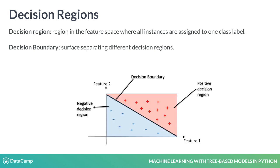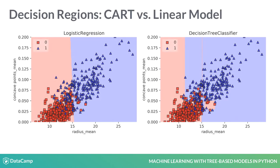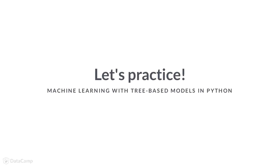The figure here shows the decision regions of a linear classifier. Note how the boundary is a straight line. In contrast, as shown here on the right, a classification tree produces rectangular decision regions in the feature space. This happens because at each split made by the tree, only one feature is involved. Now, let's practice.